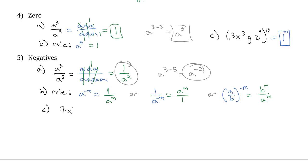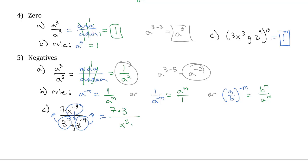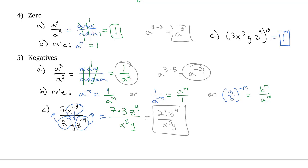For example, with 7x to the negative 5th over 3 to the negative 1 times yz to the negative 4th — all pieces with a negative exponent move. The 7 stays on top, x to the negative 5th moves to the bottom, 3 to the negative 1st moves to the top, y stays on the bottom, and z to the negative 4th moves to the top. When those exponents move, they become positive. Simplifying further, we get 21z to the 4th over x to the 5th y. We have five properties of exponents to get comfortable with: product, quotient, power (which has three parts), zero, and negative exponents.